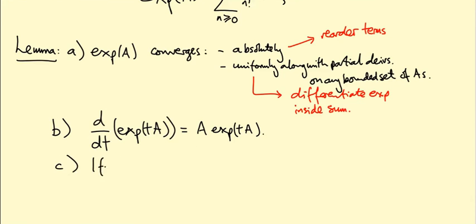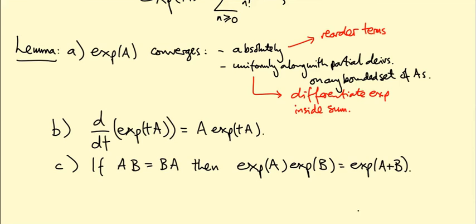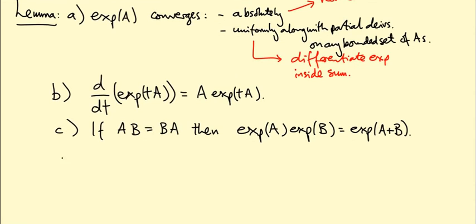Part C. If A and B commute with one another, so that AB equals BA, then we get the nice law of exponents that we're used to with numbers, which is exp A exp B equals just exp of A plus B. This works if the matrices commute with one another, so if AB equals BA. If they don't commute, this is usually going to fail and we'll discuss exactly how it fails when we talk about the Baker-Campbell-Hausdorff formula in a later video. Finally, part D, exp of A is an invertible matrix for any A with inverse exp of minus A.